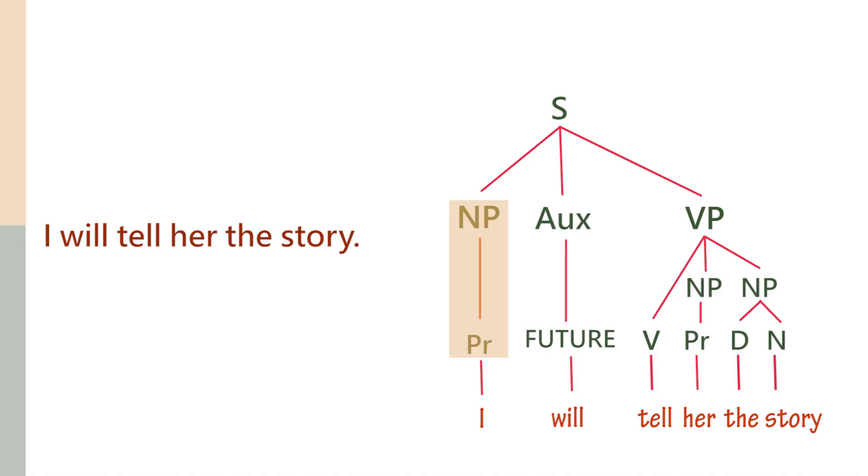When you have an Aux you need to specify the tense. Tell is a verb, her is a pronoun, the is a determiner, story is a noun. This NP consists of a pronoun. The VP here has a verb with two noun phrases. A pronoun goes into a noun phrase before it goes to the verb phrase. We need to have phrase structure rules that account for the phrase structure of the sentence.